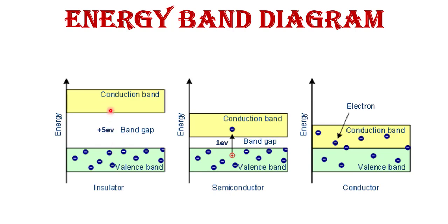The valence band and conduction band are separated by a band gap, also known as the forbidden energy gap. In an insulator, this forbidden energy gap between the valence band and conduction band is very large — greater than 5 eV. Because of this large band gap, valence electrons cannot easily move into the conduction band, so current cannot flow.